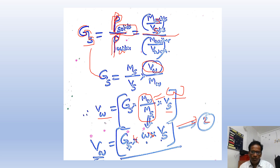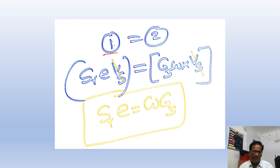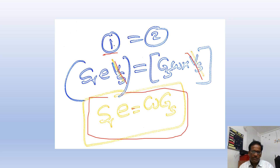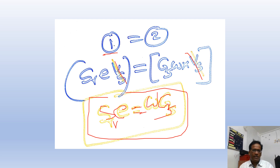Now we are going to equate Equation 1 and Equation 2. Equation 1 gives Sr times e times Vs, and Equation 2 gives Gs times w times Vs. Since Vs appears on both sides it cancels, giving us the final relationship: Sr times e equals w times Gs. This is the relationship between degree of saturation, void ratio, water content, and specific gravity of soil solids. Thank you.